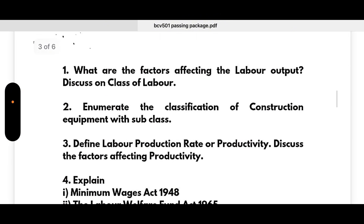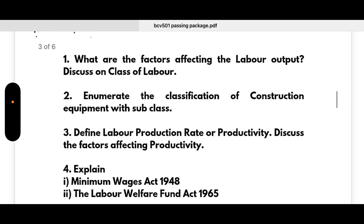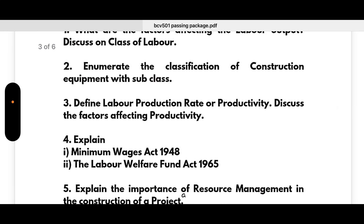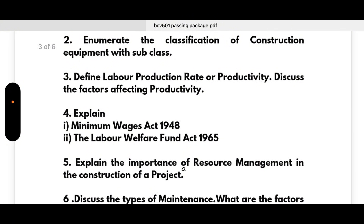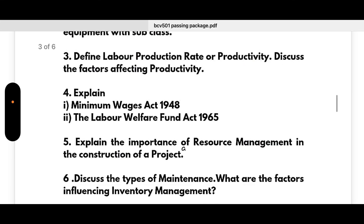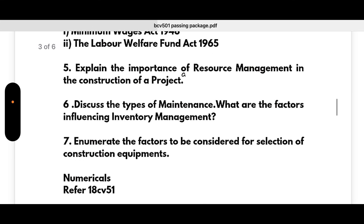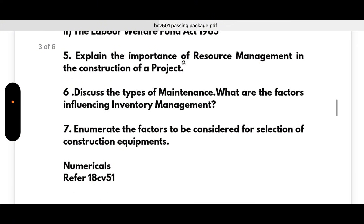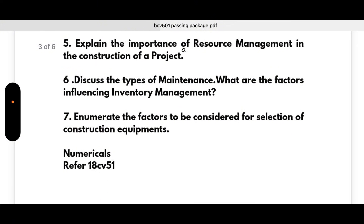Coming to Module 2: what are the factors affecting labor output — discuss the class of labor; enumerate the classification of construction equipment with subclass; define labor production rate or productivity and discuss the factors affecting productivity; explain the Minimum Wages Act 1948 and the Labor Welfare Fund Act 1965; explain the importance of resource management in the construction of a project.